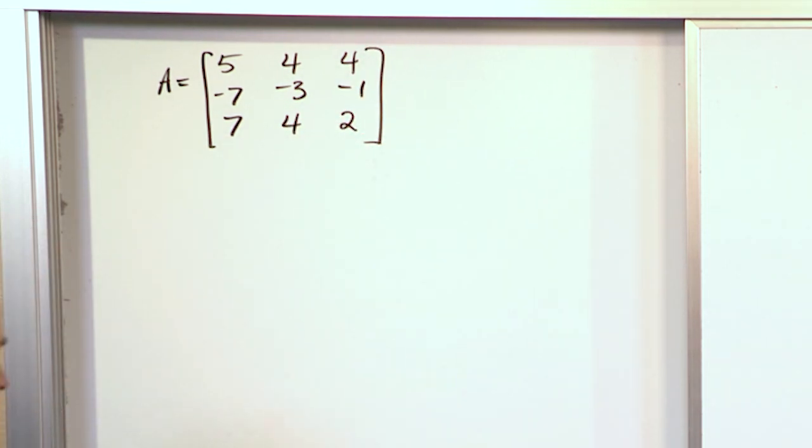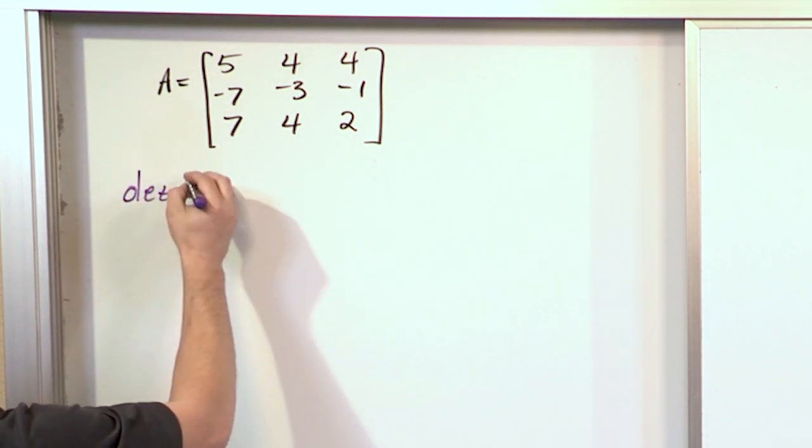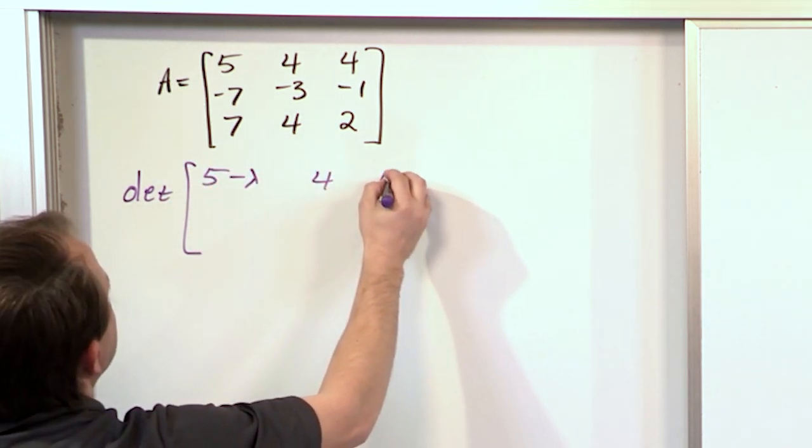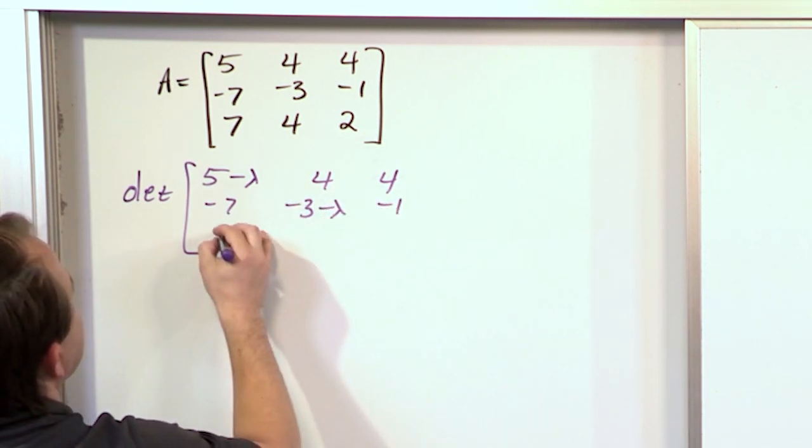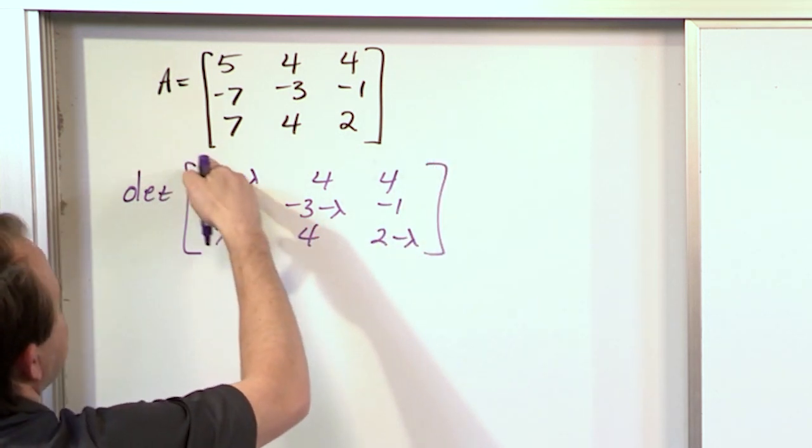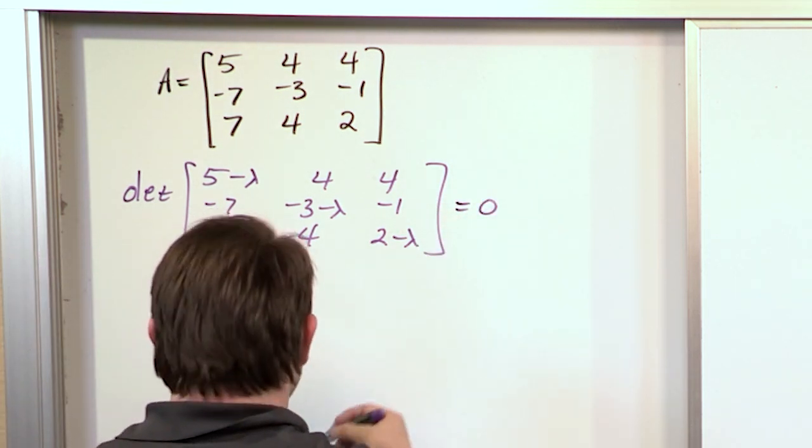We want to find the eigenvalues of that matrix. So what you do is you take the determinant of the characteristic matrix: 5 minus lambda, 4, 4, negative 7, negative 3 minus lambda, negative 1, 7, 4, 2 minus lambda. Same thing, different day. You just take the minus lambdas on the diagonal, and you're setting this determinant equal to zero.